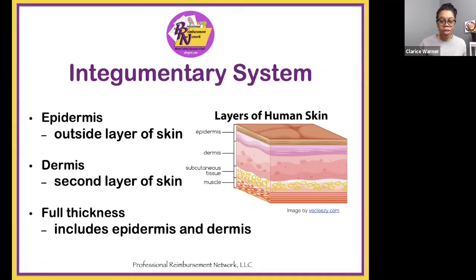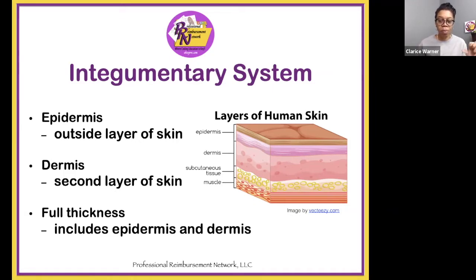This is a diagram of the actual layers of the human skin. You have the dermis, which is the second layer of skin, the epidermis, which is the outside layer of the skin, and full thickness actually is both of those layers together.